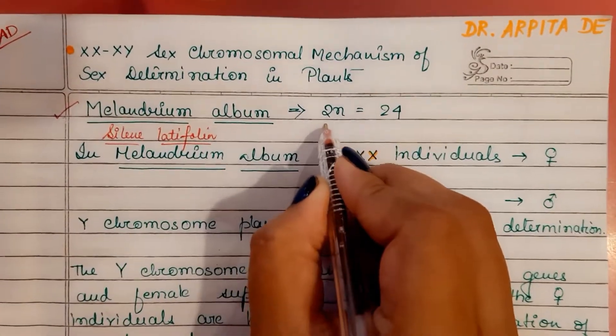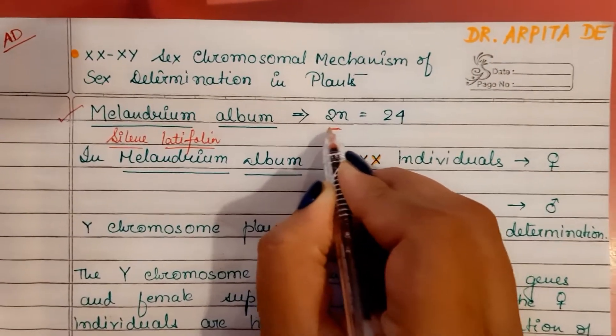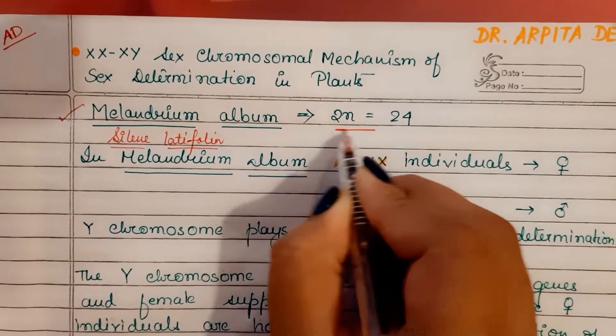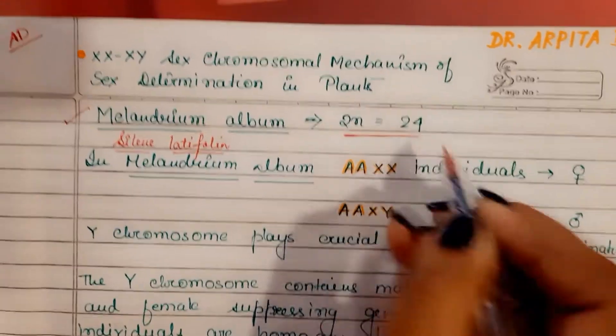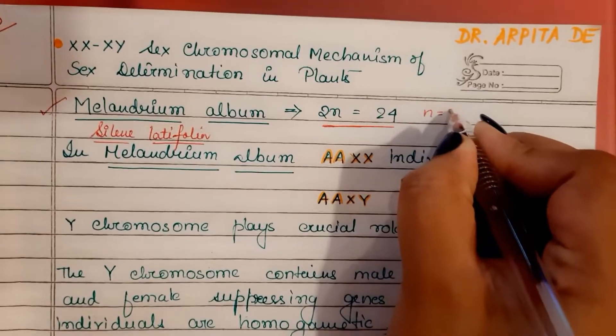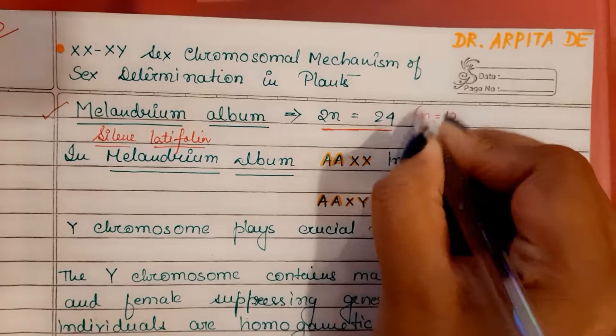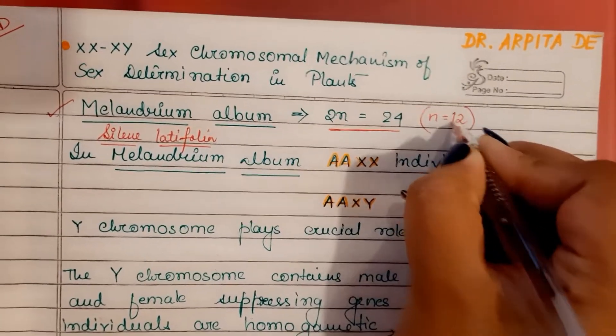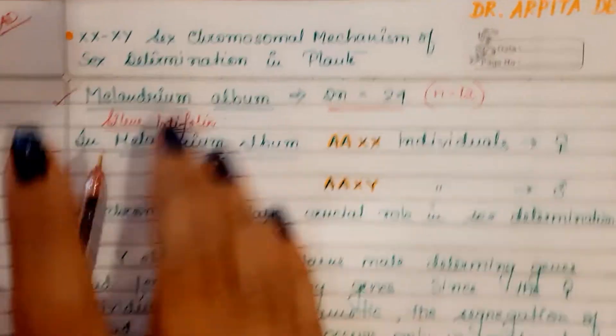Here the chromosome number of this plant is 2n equal to 24. That is, n is 12.